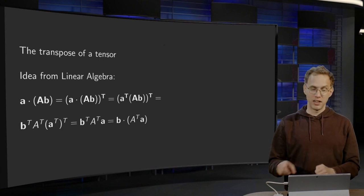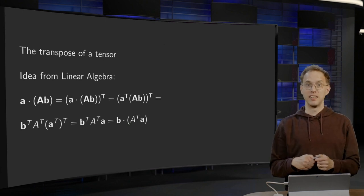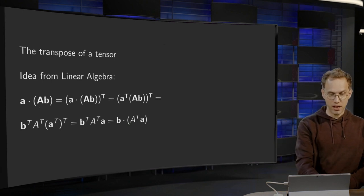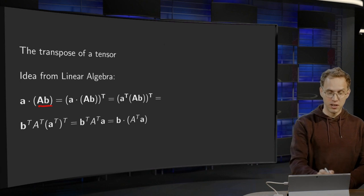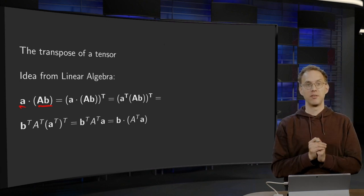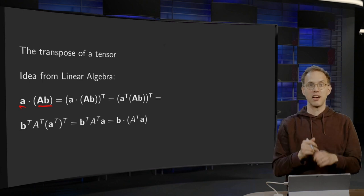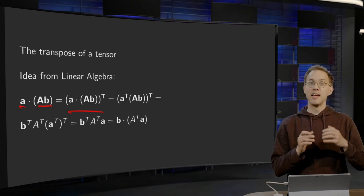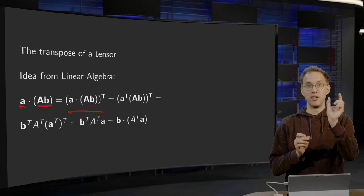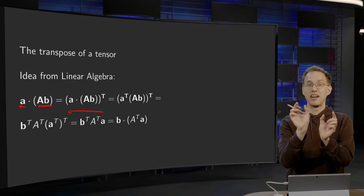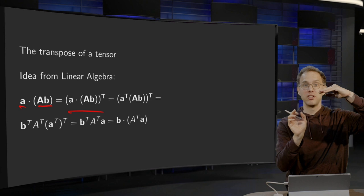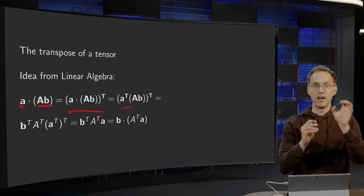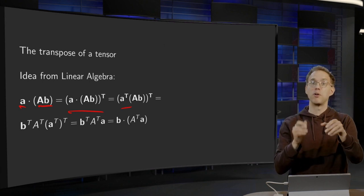We take a look at linear algebra to get an idea how to define the transpose of a tensor. Here we have AB, which is some vector — take the inner product with some A and we get a scalar. So A inner product with AB is some scalar. If I take the transpose, nothing happens. Then I know that if I have an inner product between a vector A and another vector, I can write this as a matrix product where I take the transpose of the first one times the other vector.